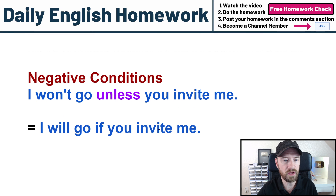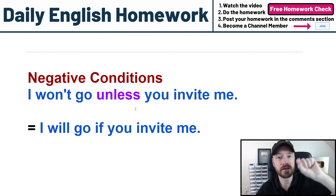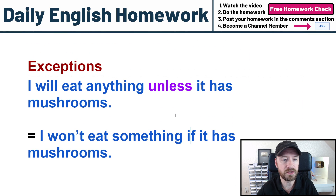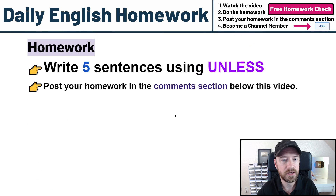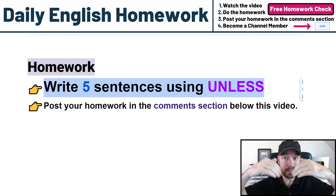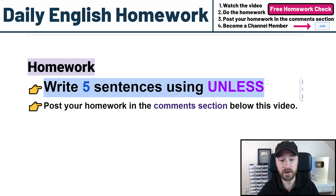To review: UNLESS is used in two main ways. First, conditions — you have to meet one condition before another happens: 'I won't go unless you invite me.' Second, exceptions — a general statement with an exception: 'I will eat anything unless it has mushrooms.' For your homework, write five sentences using UNLESS. Try using it in the middle of a sentence and at the beginning of a sentence. Mistakes are okay — we're here to learn. Thanks for watching everyone, and I'm eager to see your homework. Good luck!